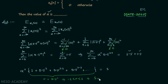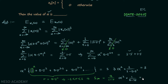The sum of an infinite GP is a over (1 minus r), where a equals 1. So we have alpha^2 times 1 over (1 minus 0.5^2) equals 3, which gives alpha^2 times 1 over 0.75 equals 3. Solving this, alpha^2 equals 2.25, so alpha equals plus or minus 1.5. Since alpha is a positive real number, the answer is alpha equal to 1.5.